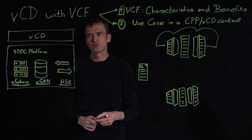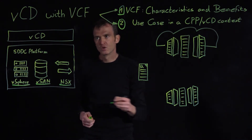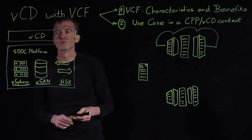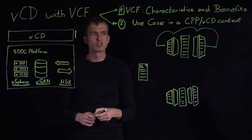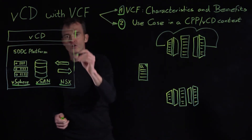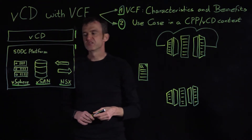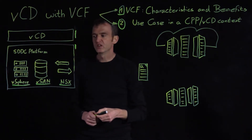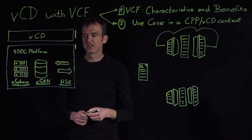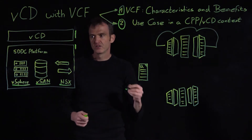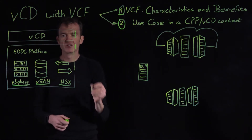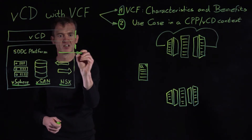Let's start off by first describing a typical cloud provider platform stack. On top we have vCloud Director as the core component of implementing our orchestration and automation layer. Right below that we have the SDDC platform, which comprises vSphere as our virtualized compute layer, vSAN as our virtualized storage layer, and NSX as our virtualized network layer. This SDDC platform is implemented in our discussion by VCF, VMware Cloud Foundation.